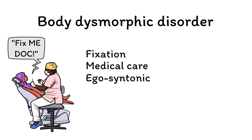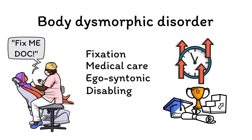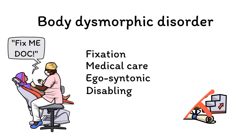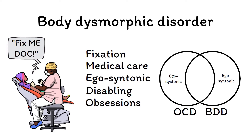The 'D' will remind us of the disabling nature of this disorder, as patients are not only distressed by the perceived flaw but will also spend significant amounts of time trying to correct or hide it. Like OCD, patients can spend upwards of 8 or 12 hours per day on this, preventing them from engaging in usual activities of life like work, school, and socializing. Next, the 'O' will remind us of the similarities this disorder shares with the obsessive thought patterns found in OCD. With the exception of the ego-syntonic nature of the fixation, these thoughts mirror the obsessions found in OCD in many other ways, including being intrusive, distressing, and recurrent.